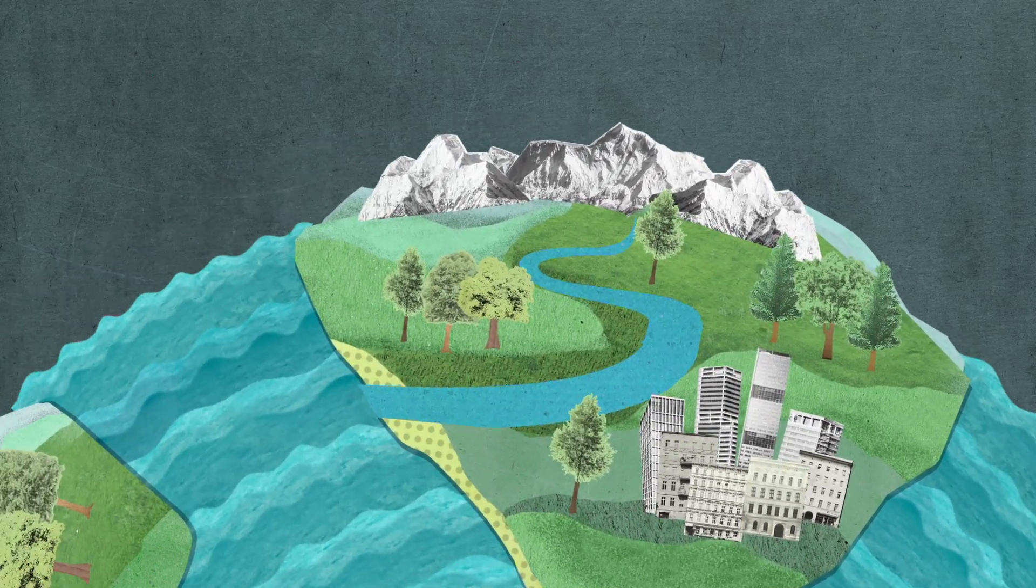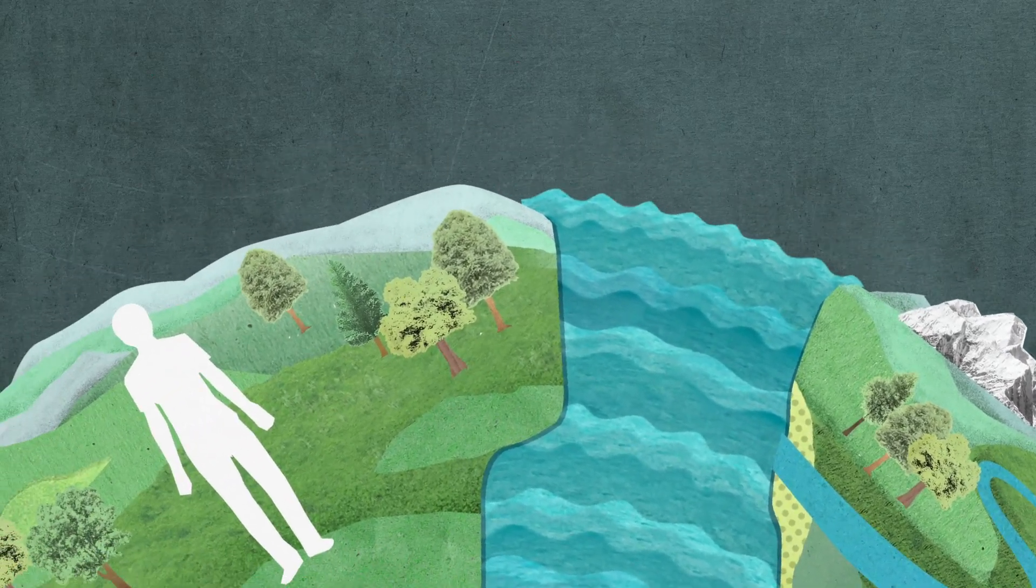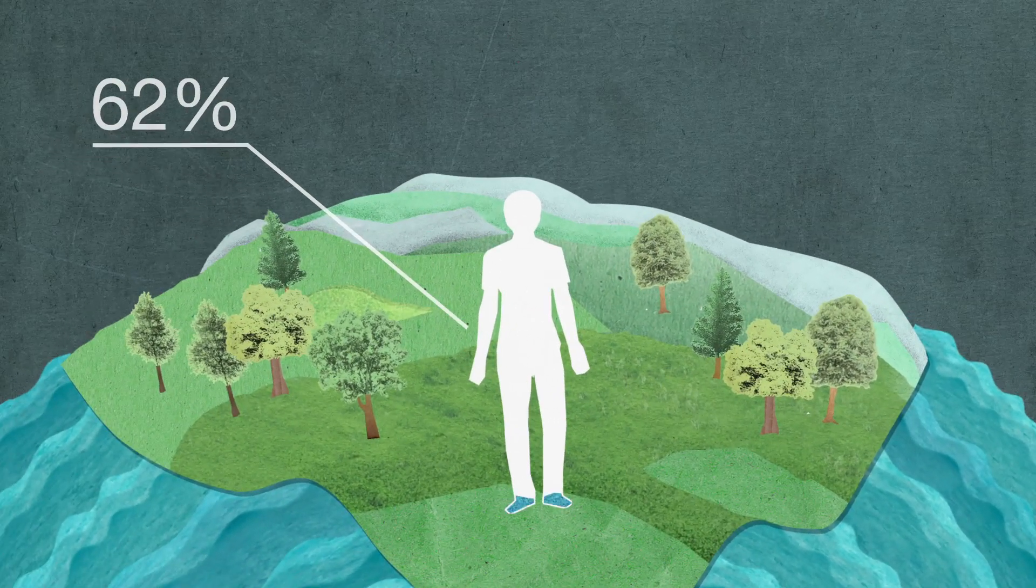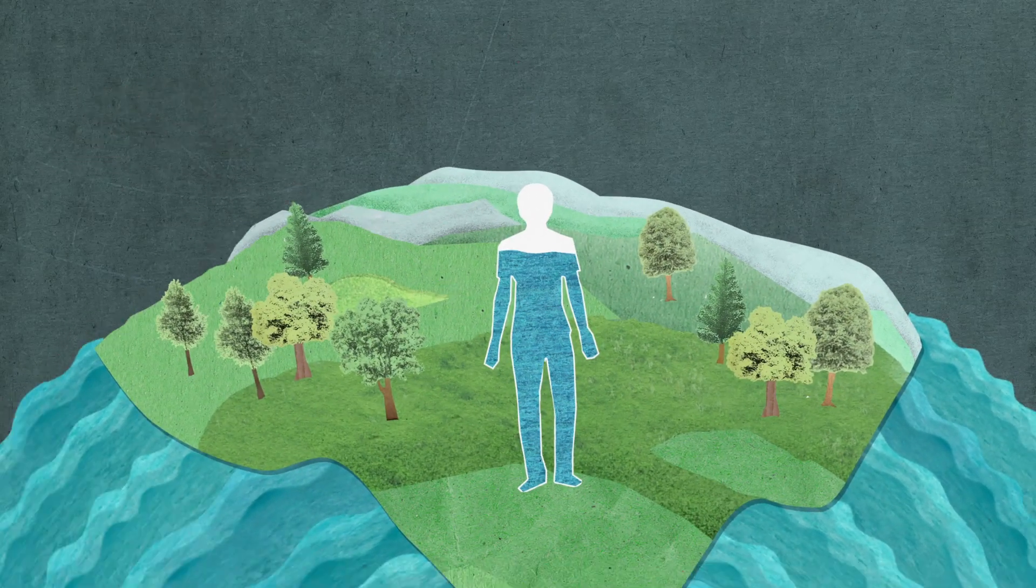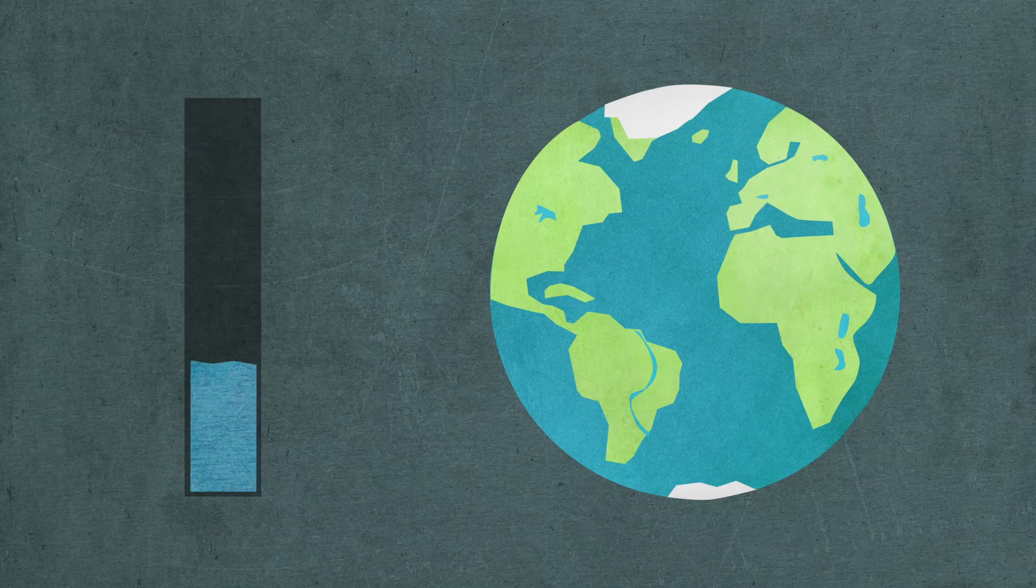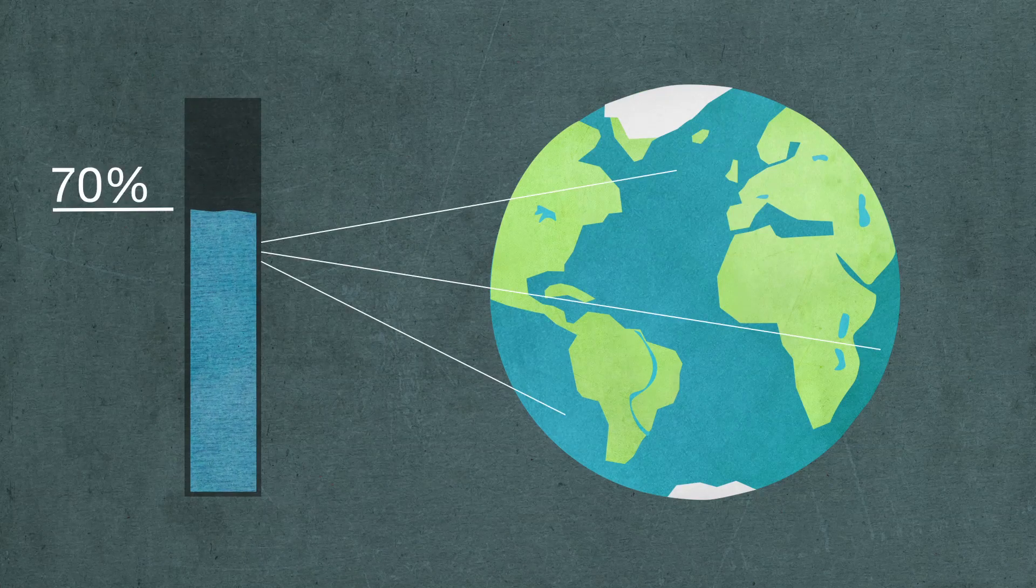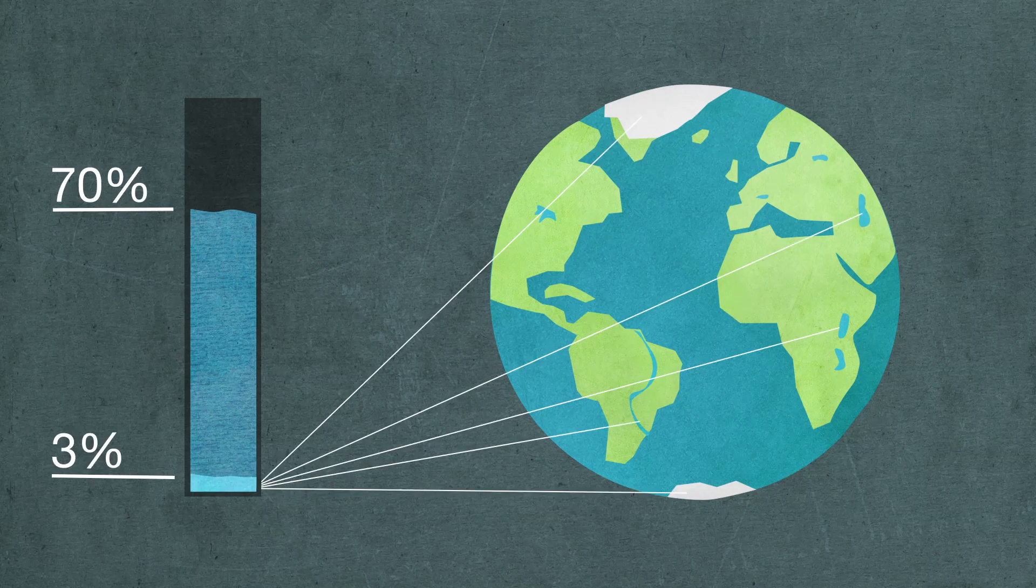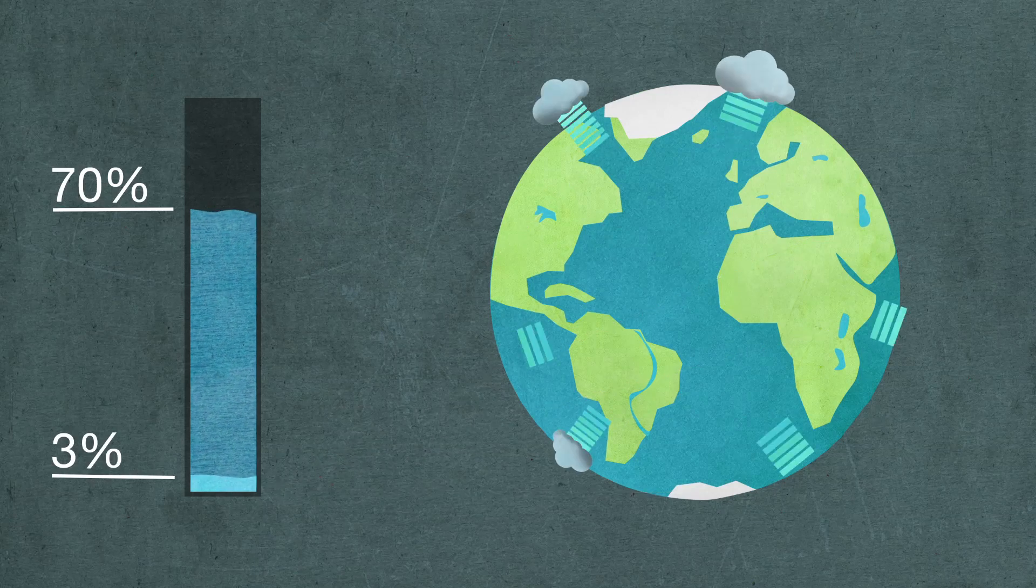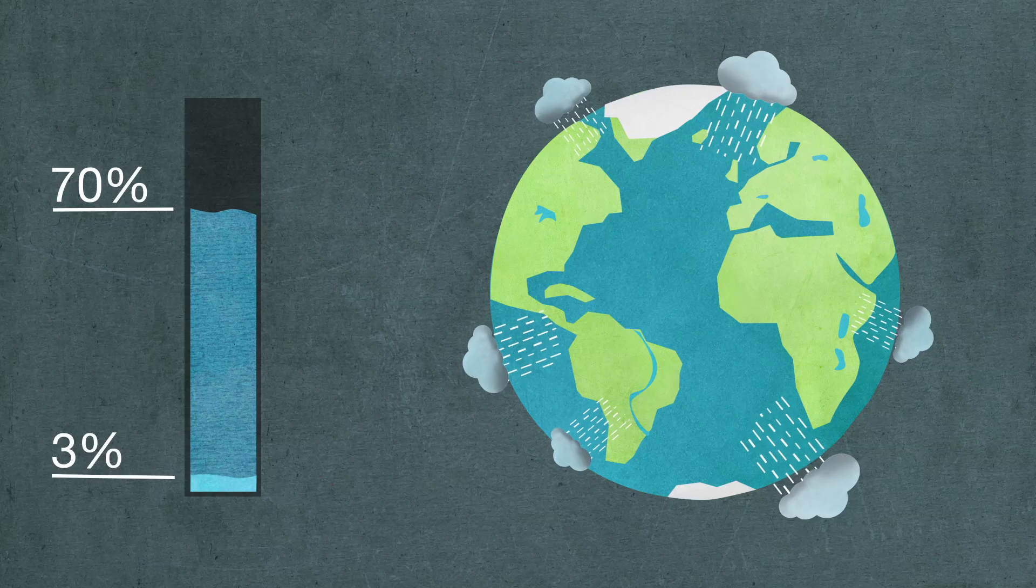Water is the basis of all life on Earth. It makes up 62% of our bodies and water covers around 70% of the planet's surface. But only 3% of that is fresh water, which is constantly renewed through a cycle of evaporation and rainfall.